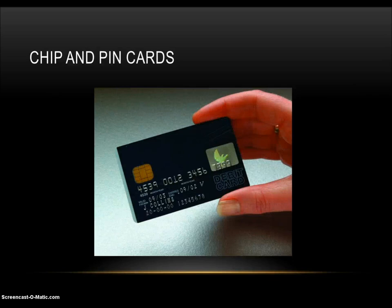Chip and PIN cards try to reduce offline fraud by requiring the card PIN to be entered at the point-of-sale terminal. This replaces a cardholder signature, which was easily forged, as a method used to authenticate the customer as a card owner. Chip and PIN technologies also reduce incidence of card cloning, as it is much more difficult for criminals to clone a microchip than a magnetic strip found on previous cards.